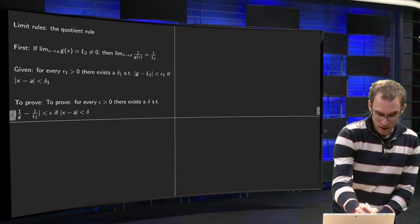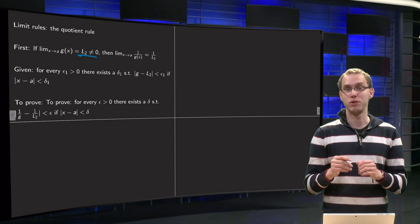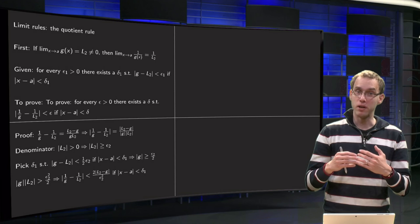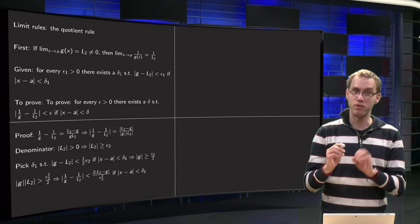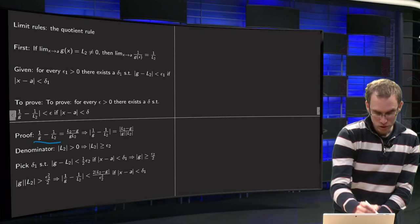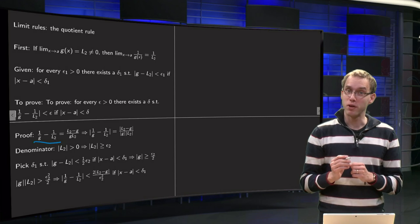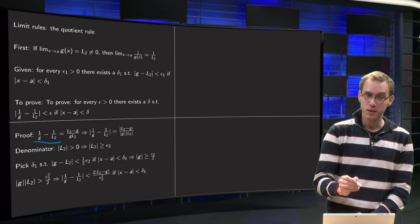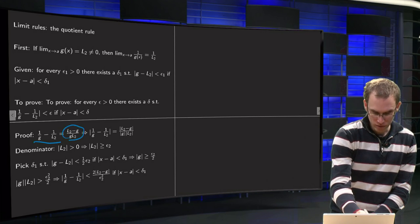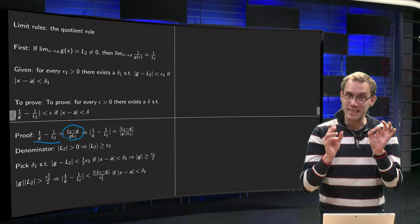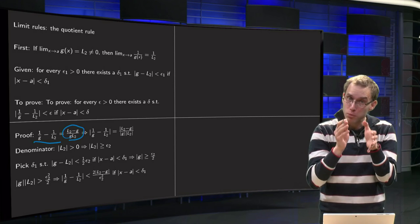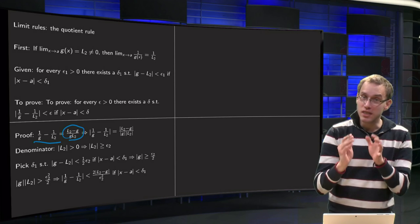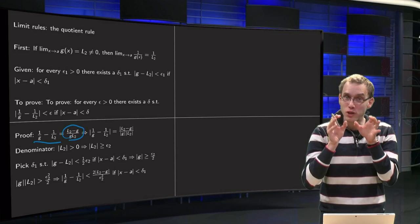How are we going to do that? Well, we are going to use the fact that L₂ is not equal to zero. That means the norm of L₂ is bigger than zero. We need to show that 1/g minus 1/L₂ becomes small. First, we combine those into one fraction: that gives us L₂ minus g in the numerator, which is nice because that will become small. But we also have to divide by g times L₂, and we must make sure that will not become zero, because then our difference would blow up.